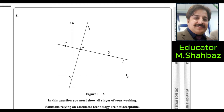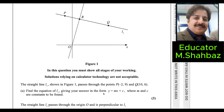This is question number five. In this question you must show all the stages of your work. Solutions relying on calculator technology are not acceptable. The straight line L1 shown in the figure passes through two points, P and Q. Find the equation of the line L1.